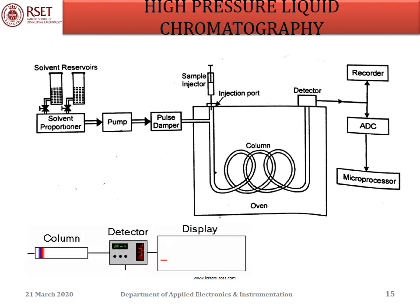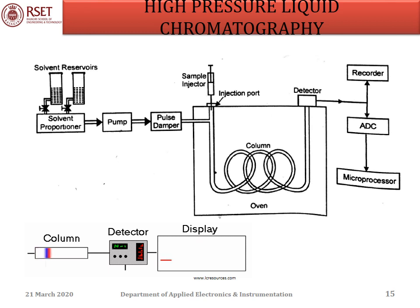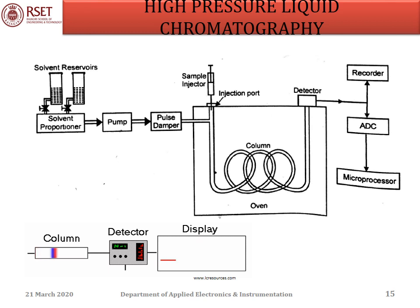The mobile phase liquid from the solvent reservoir is delivered to the column by a pump. The pumping system must be pulse-free, or a pulse damper must be installed to avoid instability in the detector. Sampling valves or loops are used to inject the sample into the flowing mobile phase. The sample dissolves in the mobile phase, and the different species are separated from each other while passing through the column. The detection system senses these components as they elute and produces a signal proportional to the amount of solute, which is applied to the recorder or microprocessor for further processing.